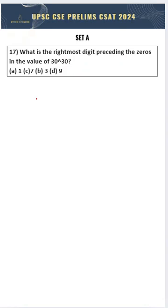What is the rightmost digit preceding the zeros in the value 30 power 30? This is an easy problem if you've learned number systems and powers. We don't have to consider the zero values because they're just asking for the rightmost digit preceding the zeros - that is, the number that comes in front of the zeros.